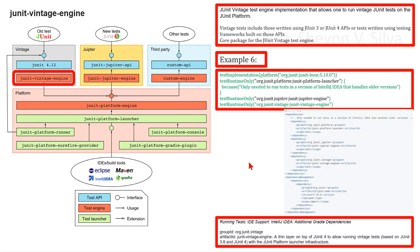Now we are considering additional Gradle dependencies in IntelliJ IDEA for IDE support in running tests. The artifact JUnit Vintage engine in group org.junit.vintage is a thin layer on top of JUnit 4 to allow running vintage tests based on the JUnit 3.8 and JUnit 4 APIs with the JUnit platform launcher infrastructure. Here you can also see the additional Maven dependencies.